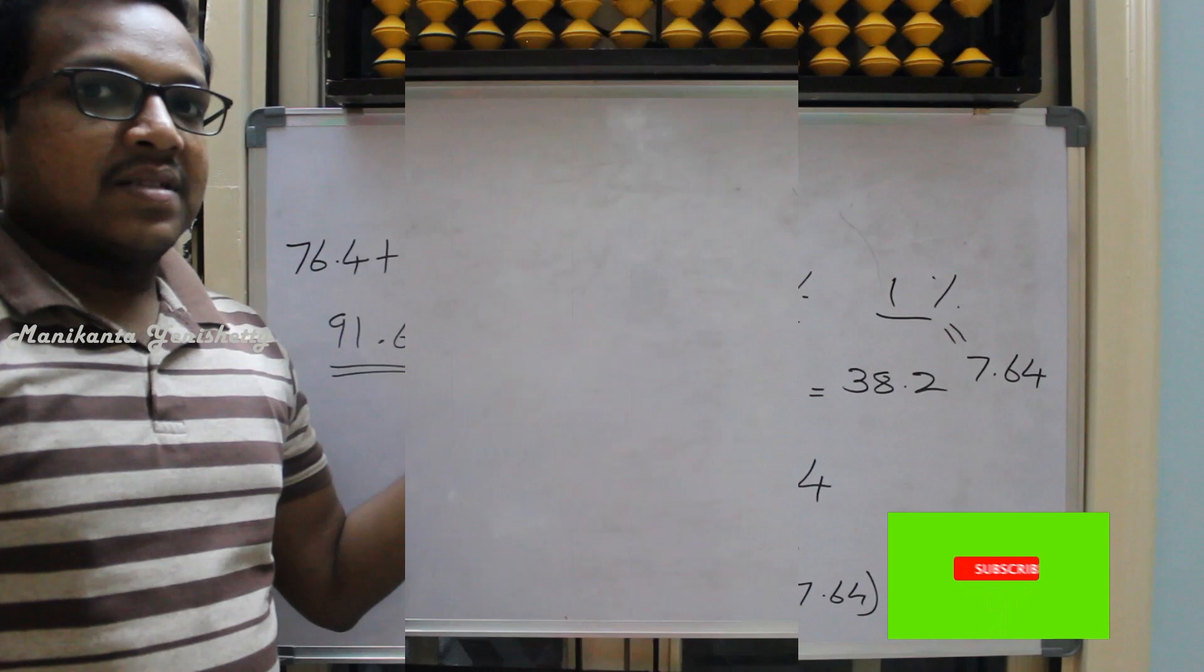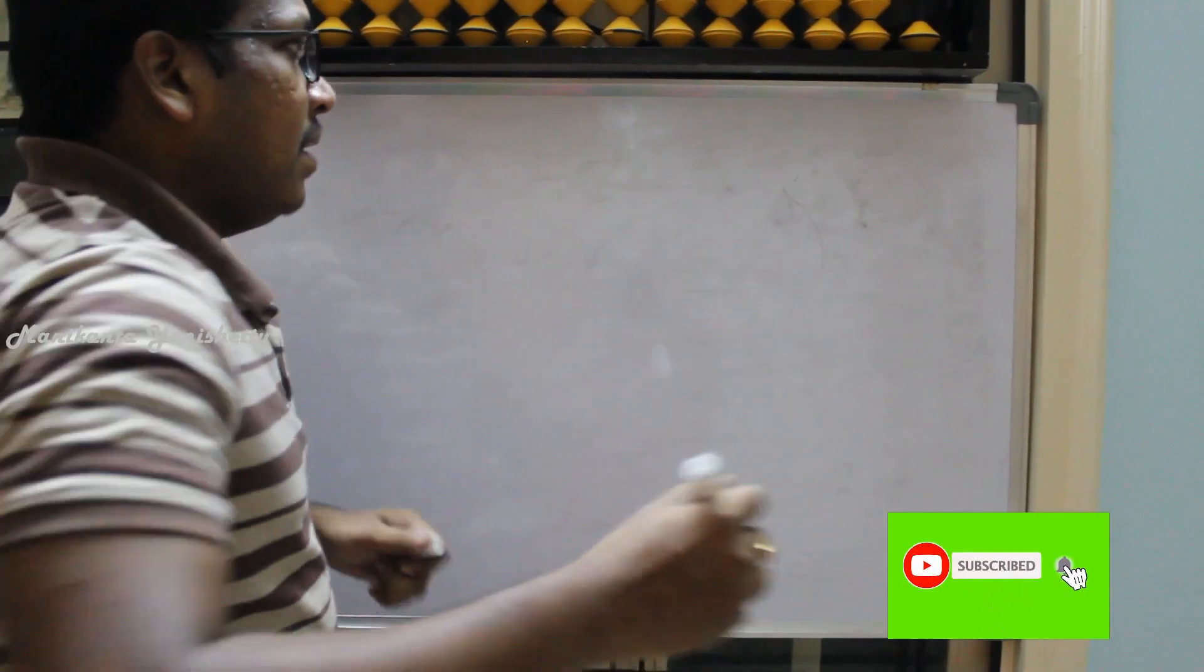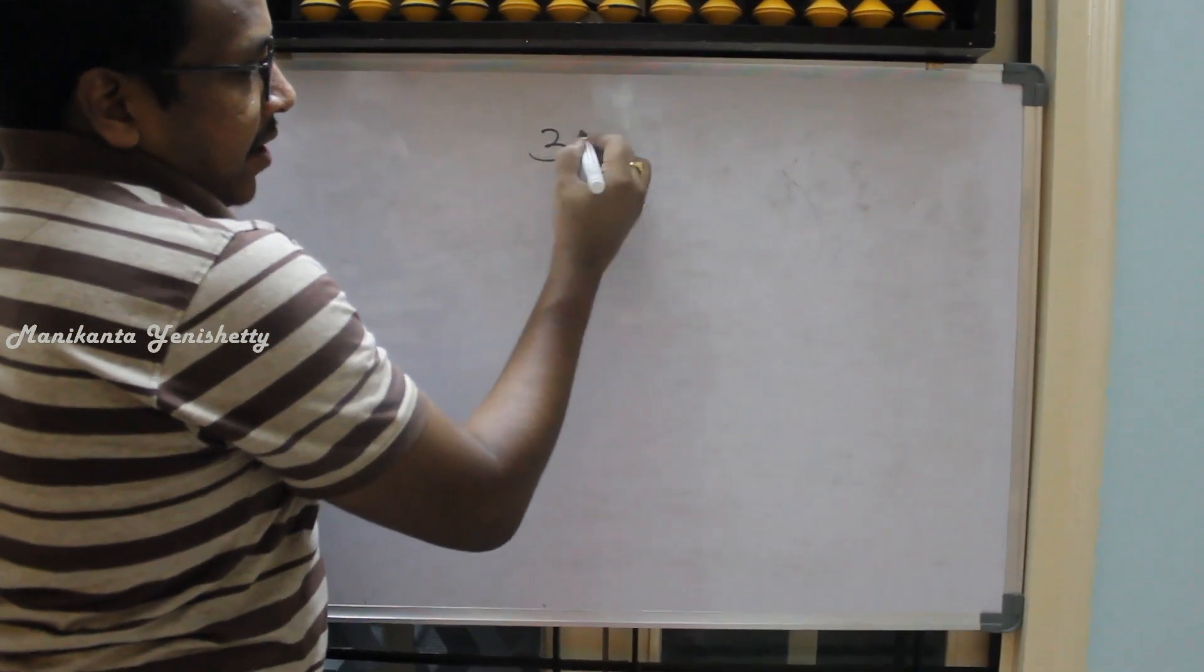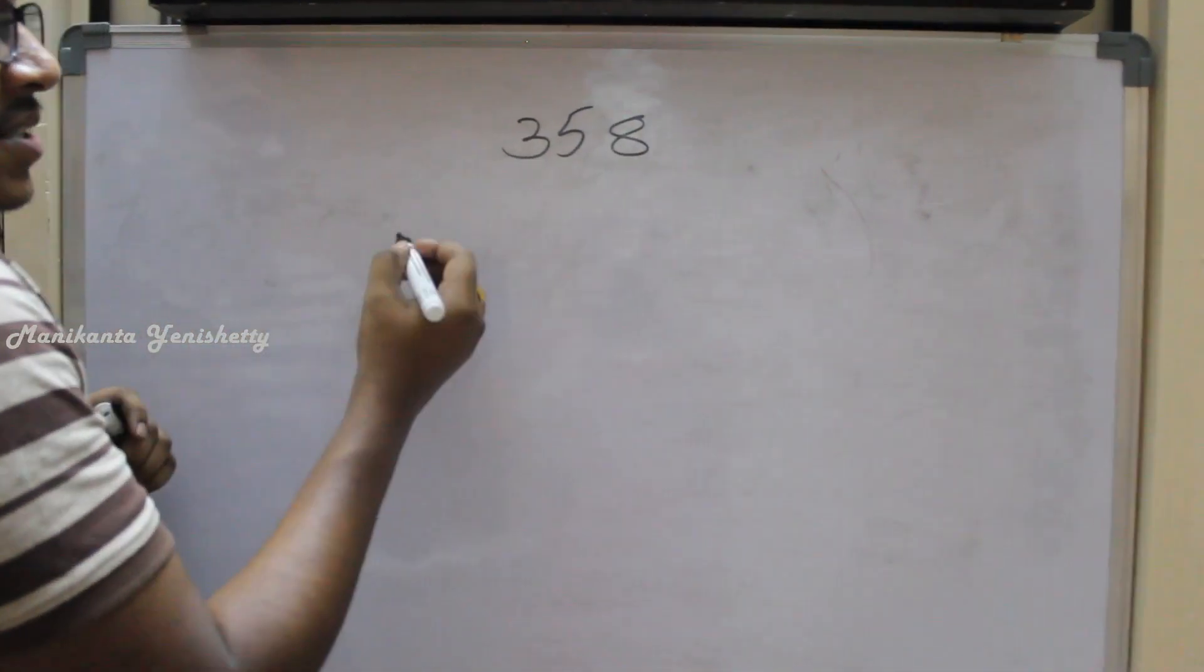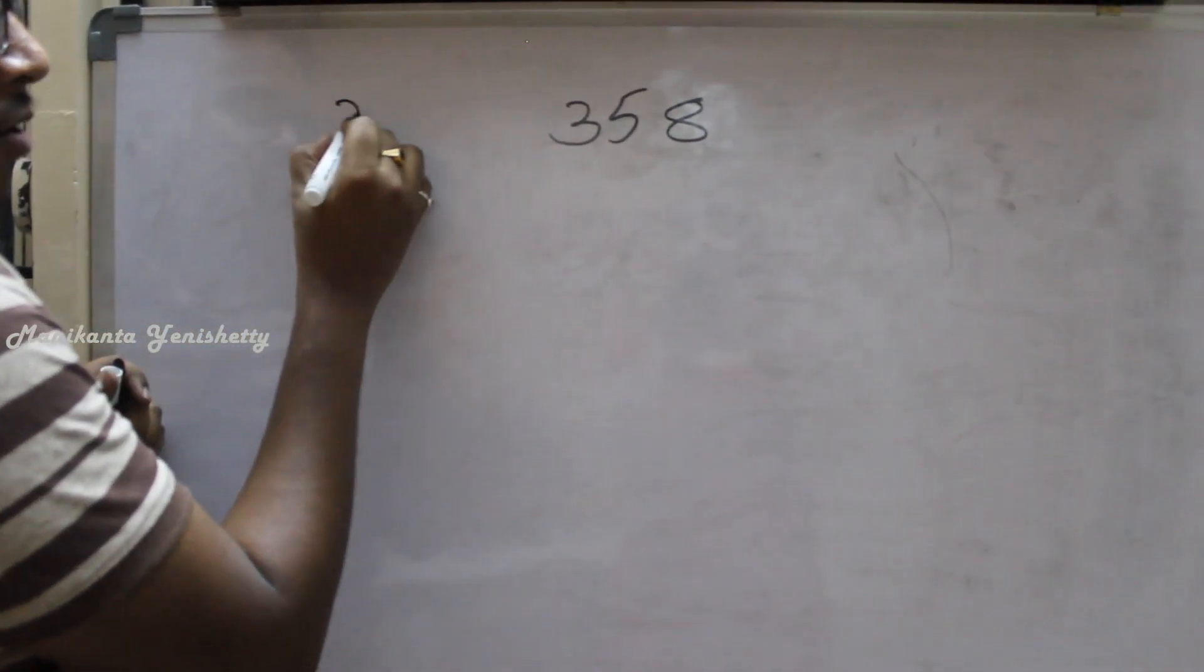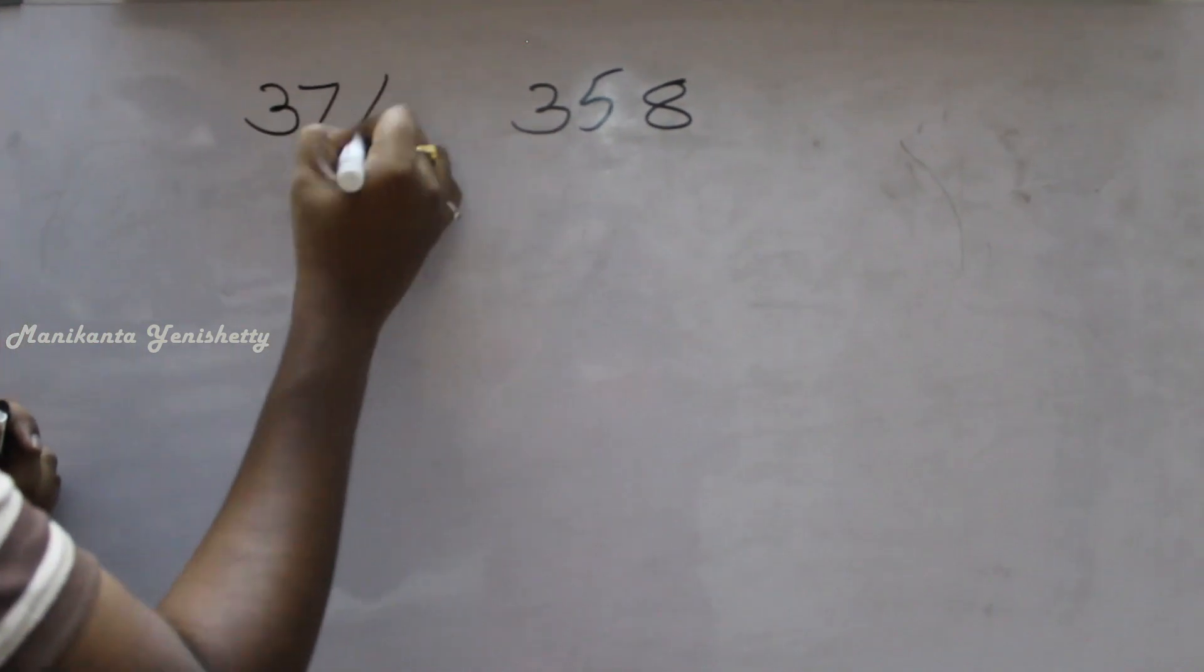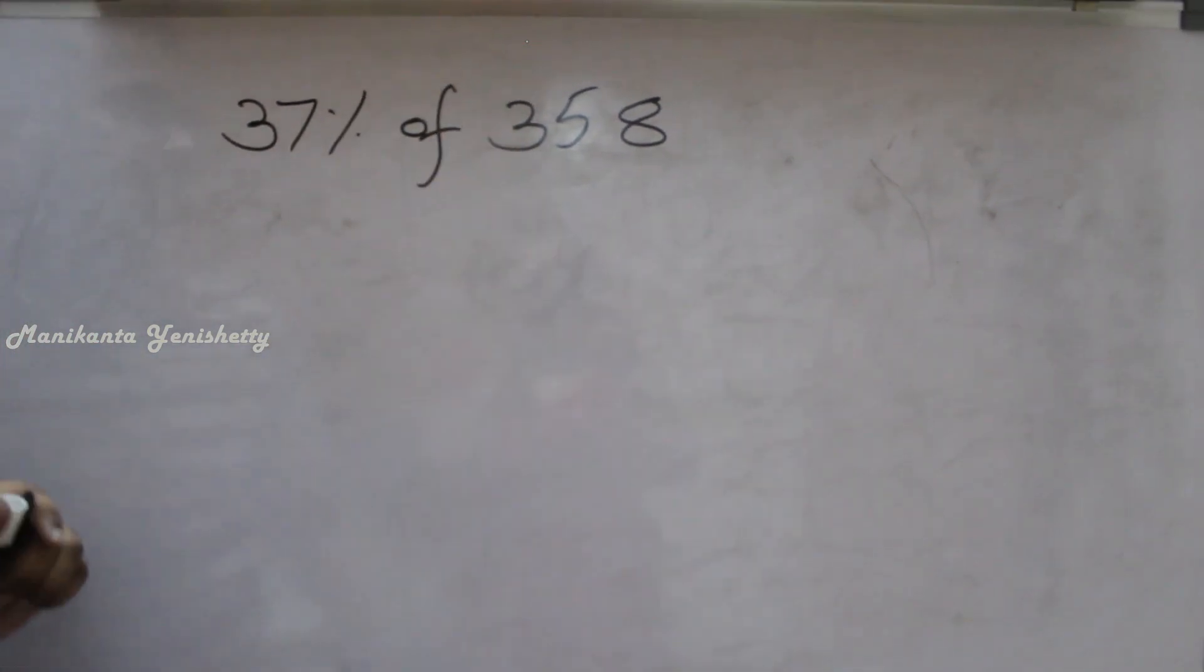Let's see some more examples. Let's take one more example. Suppose the number called 358. For this, the percentage we will find of 37. 37% of 358.